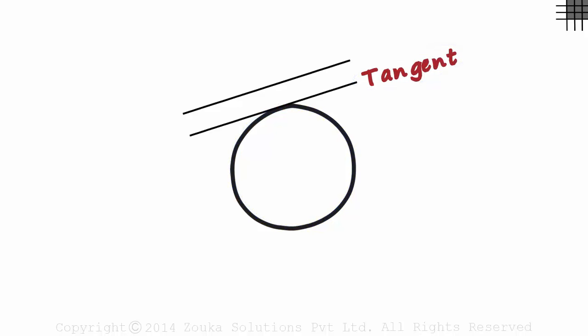And the third way in which it can meet the circle is like this, at two points. It's called a secant. One point tangent and two points secant.